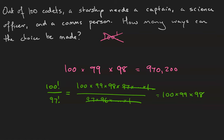And we can think of this as the number of arrangements of the cadets divided by the number of arrangements of the unchosen cadets.